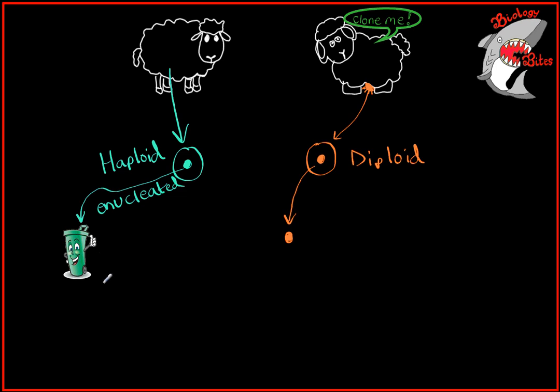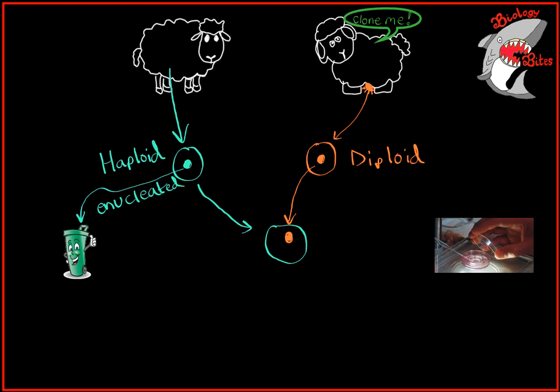What will result is that we will end up with an empty egg which we can put this diploid nucleus into. Essentially what we have here is an egg cell with a full complement of DNA from the animal that we want to clone on the right-hand side.